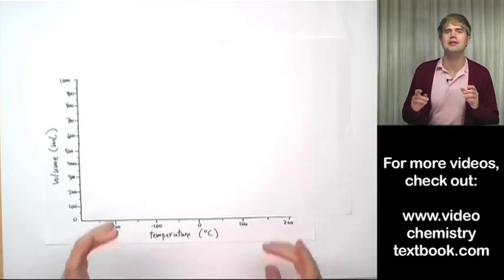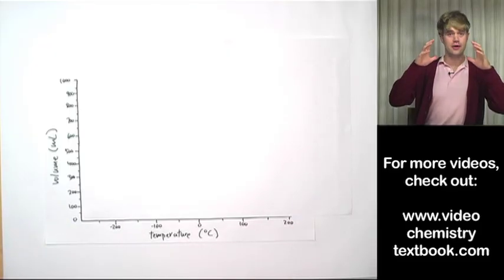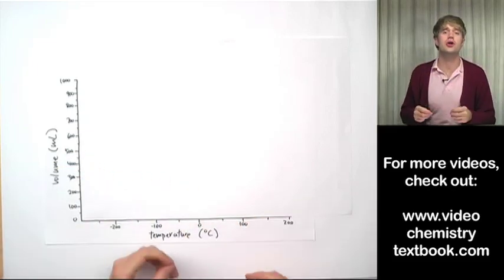Okay, so in order to find absolute zero I want to look at the relationship between temperature and volume of a gas. All right? So as I change the temperature what happens to the volume of the gas?